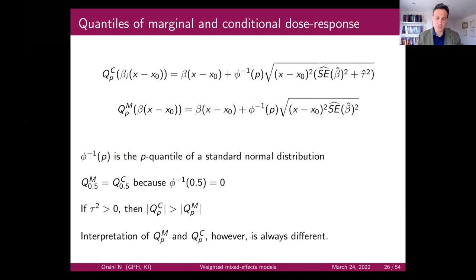Getting to the quantiles of the marginal and conditional dose-response: I distinguish the quantiles of the conditional dose-response — thinking about a population of studies — which is like a prediction interval. Rather than just 2.5 and 97.5, we think in a continuous fashion using all quantiles from 1 to 99.